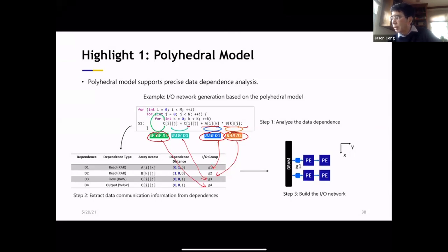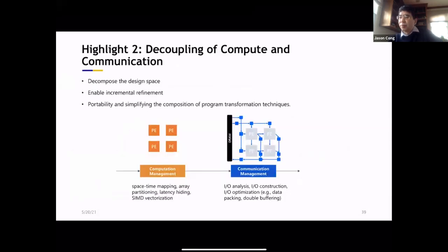So what we can use is that based on these dependencies, we can decide how we generate the network. For example, this read-after-read dependency is in this dimension. So we actually generate the data network, data communication in this dimension. And also the second one is actually in this X dimension, one, zero, zero. So that's why how we generate this network. And then finally, when you read it out, and then this is actually we look at this one. So that's actually one way we use the polyhedral model to do the dependency analysis, help us to design the network.